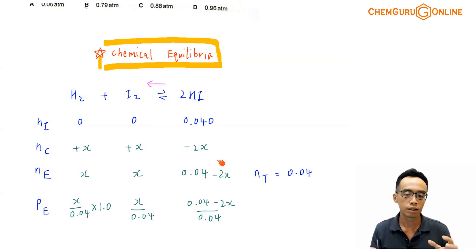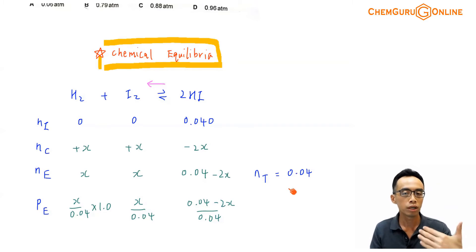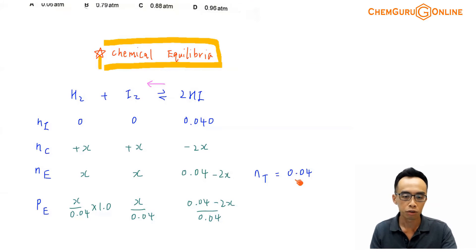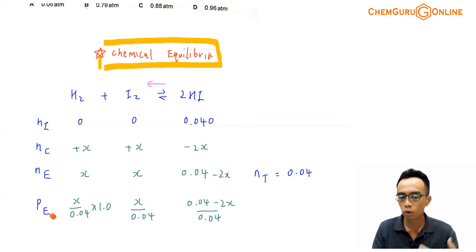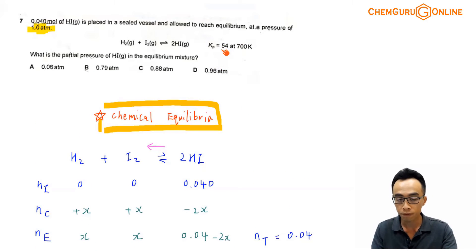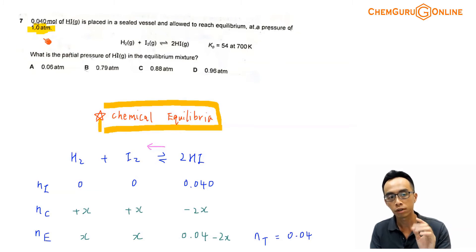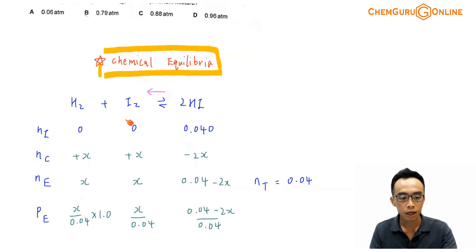At equilibrium, those are the amounts of reactants and product. The total number of moles — needed to calculate partial pressure — is the sum of moles of H2, I2, and HI at equilibrium, which adds up to 0.04. Next, we want to determine the partial pressure of each species, because the question gives us Kp = 54, which is the equilibrium constant in terms of partial pressure. The total pressure of the system is 1 atmosphere.